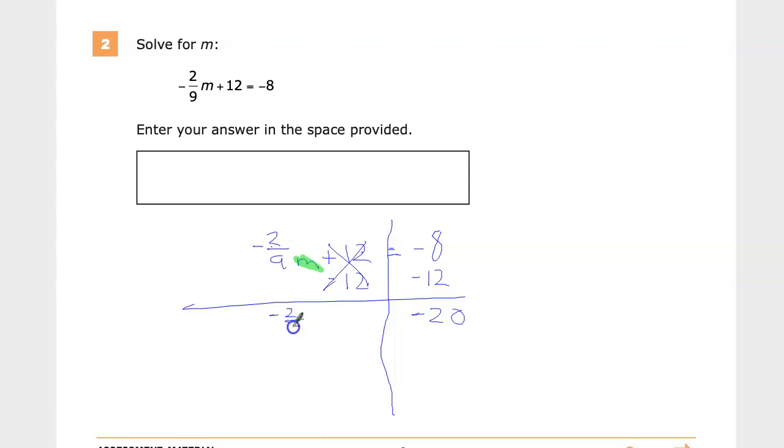Now I have negative two-ninths times m. So in this case, the relationship between these two is multiplication, because that's a coefficient. It's touching. It's negative 2 times m. So the opposite operation would be divide, but dividing by negative two-ninths is just a lot. So another option that we have is to multiply by the reciprocal. So that should help eliminate it.